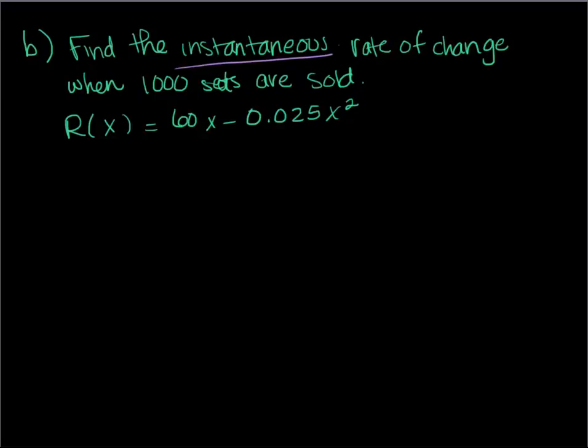And what I want you to remember here is that anytime you see instantaneous in calculus, that means derivative. Always means derivative. So what this is asking you to do instead of finding an average now between 1000 and 1050, this wants to know what was the instantaneous rate of change of our revenue at that moment in time when I sold 1000 car seats.